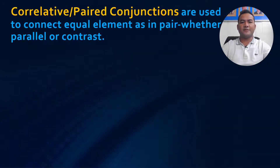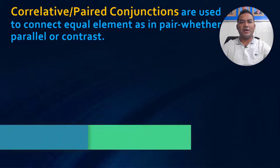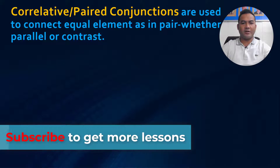Correlative or pair conjunctions are used to connect equal elements — whether in pairs, parallel, or contrast. So we use a correlative conjunction to talk about something that is in a pair. Now let's go together to check the use of the correlative or pair conjunction.